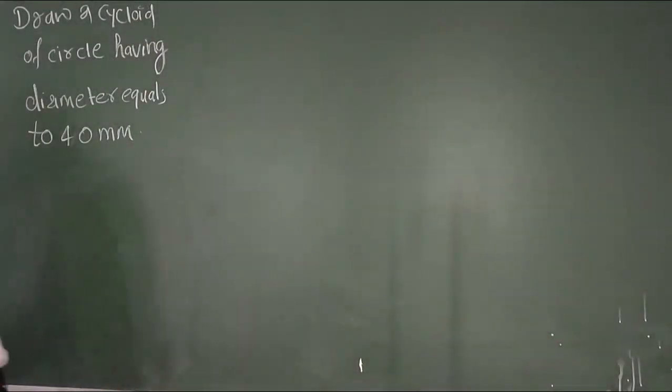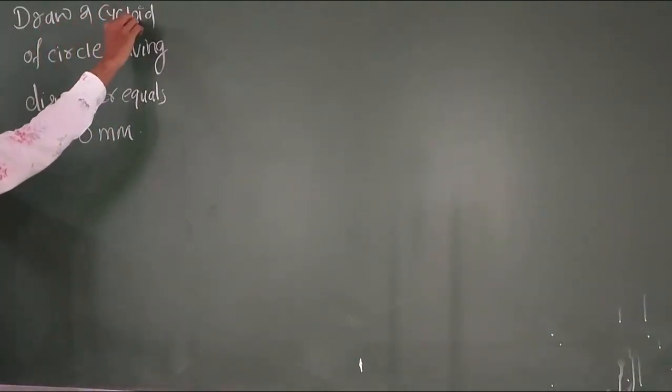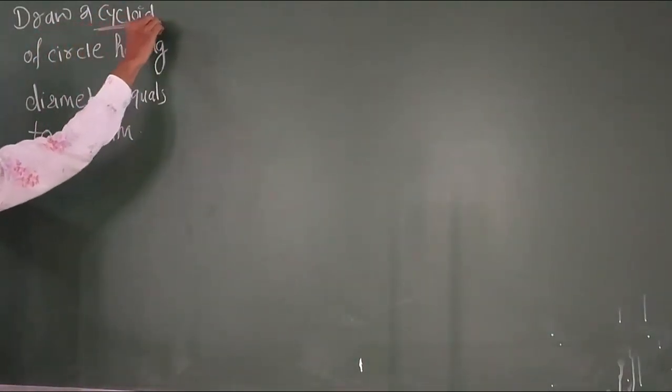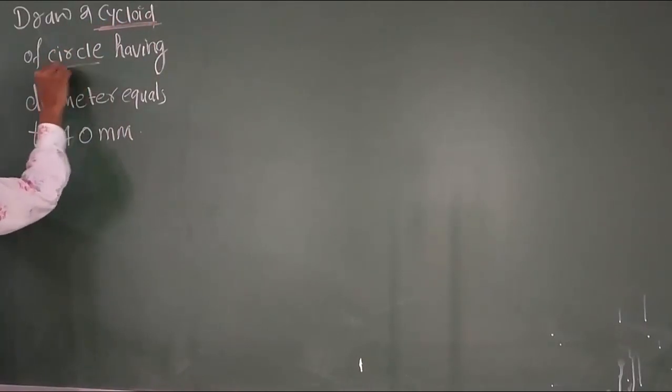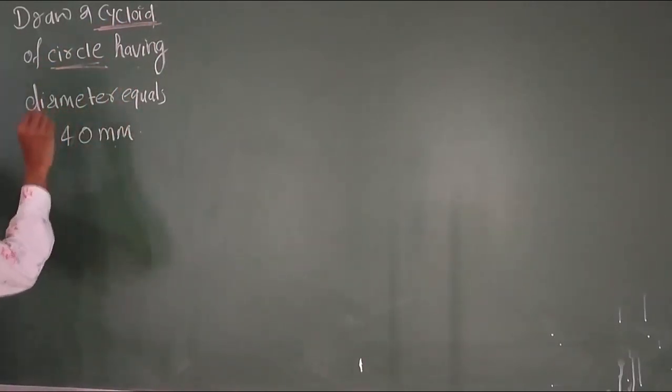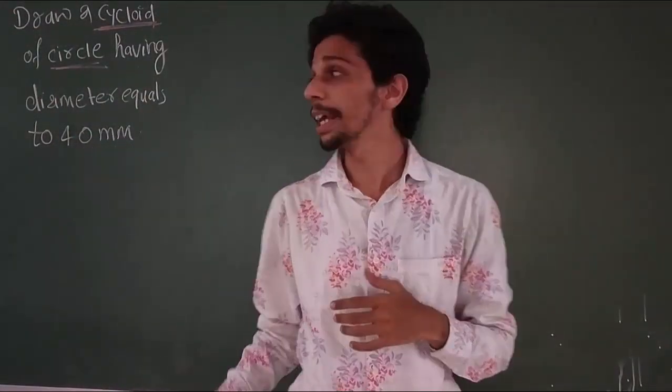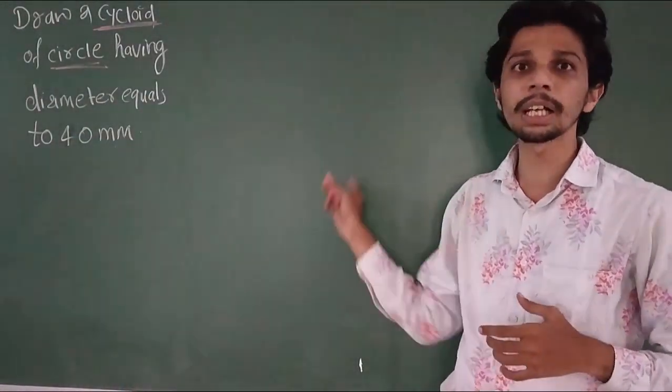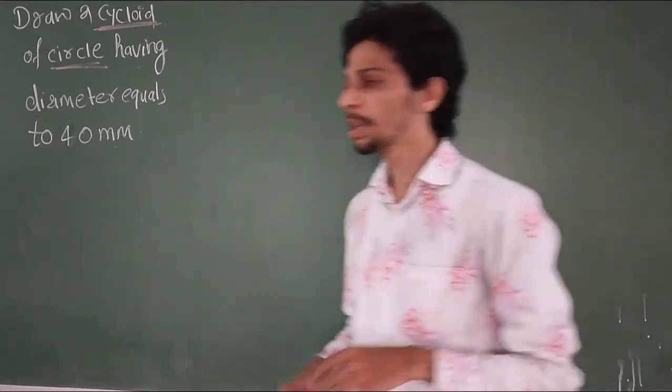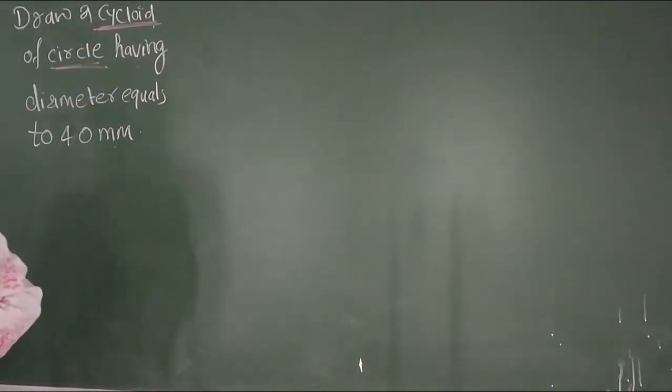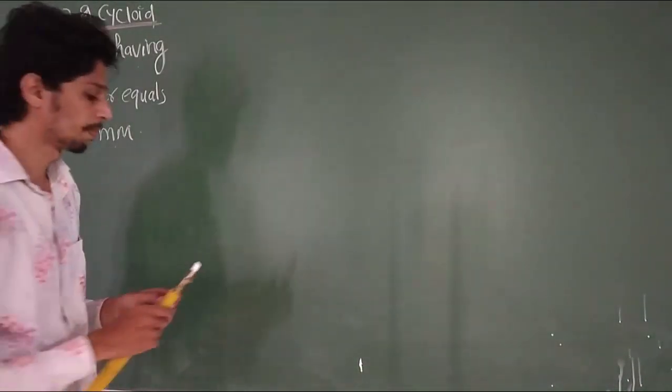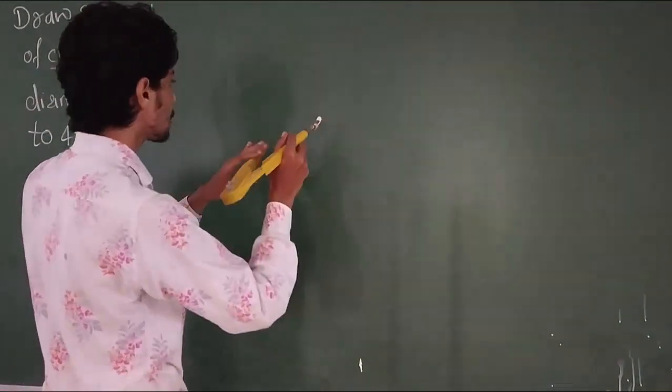So, here is the question: draw a cycloid of a circle having diameter equals to 40 mm. A cycloid of a circle which is 40 mm. So, first of all, what do we do? We will draw a circle.